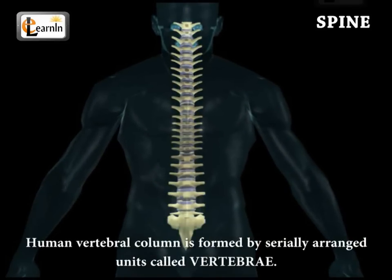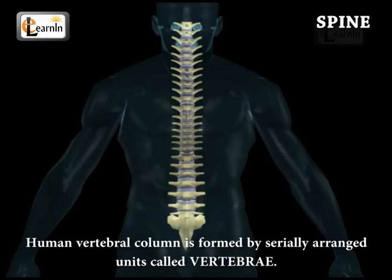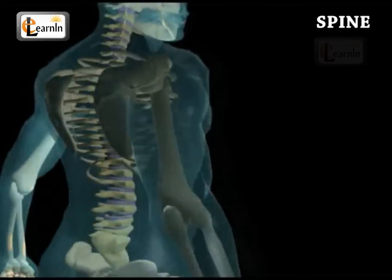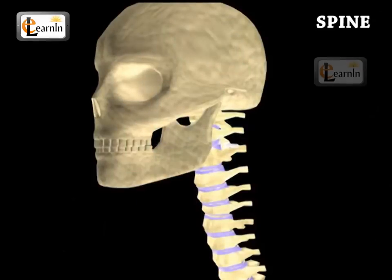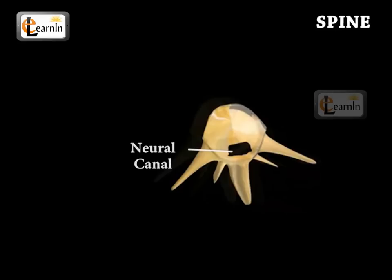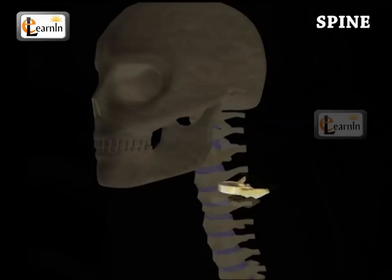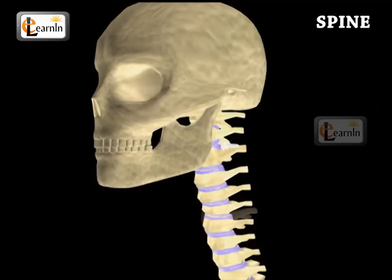The human vertebral column is formed by serially arranged units called the vertebrae, and are inwardly placed. This vertebral column extends from the base of the skull and constitutes the main framework of the trunk. These vertebrae have a central hollow position which is called the neural canal. The spinal cord passes through this neural canal.